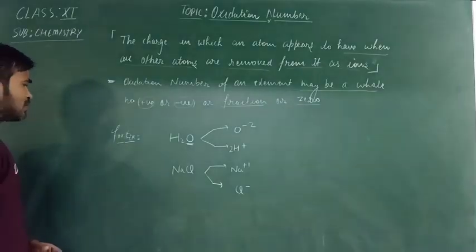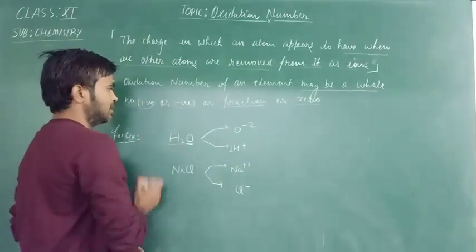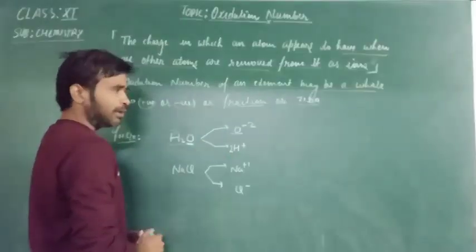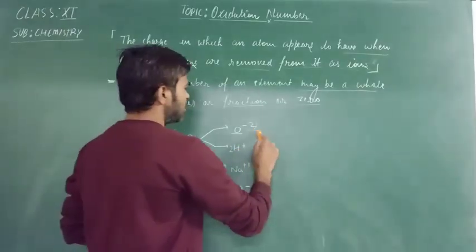Let us take an example of water. When we remove the Hydrogen from the Oxygen, then it ionizes as O^2-, and the charge here is minus 2. It means the Oxidation number of Oxygen will be minus 2.